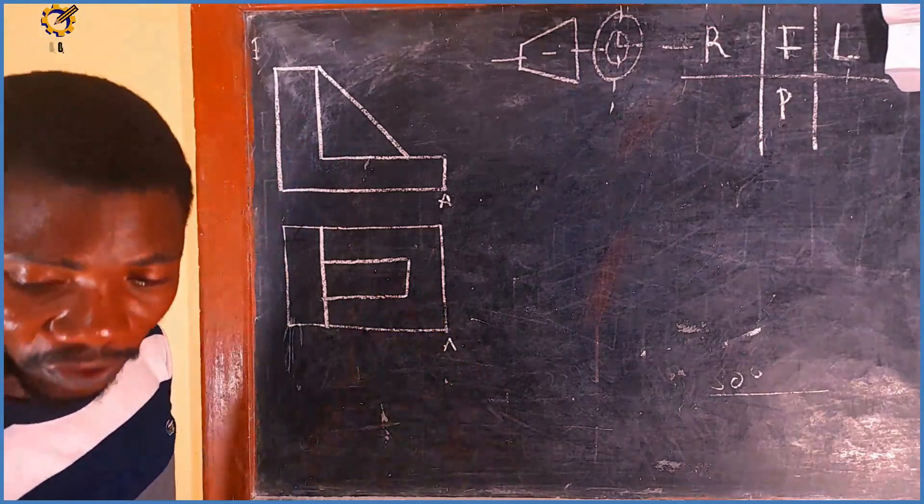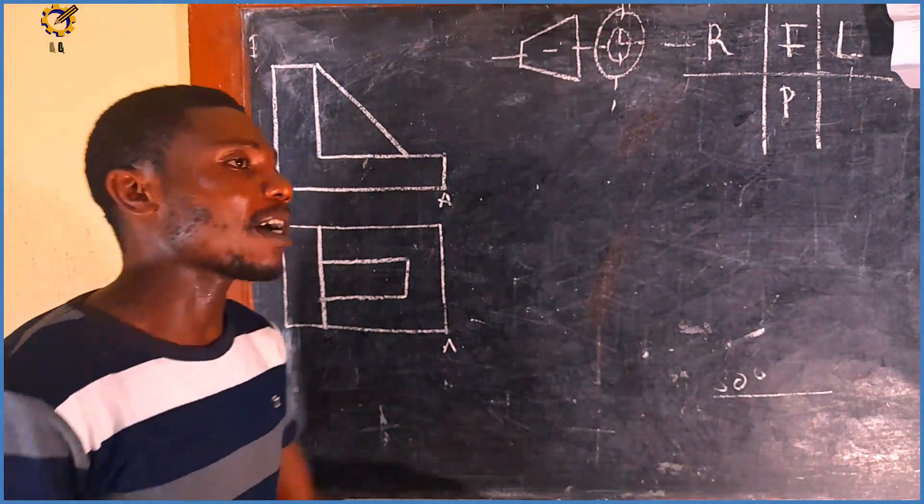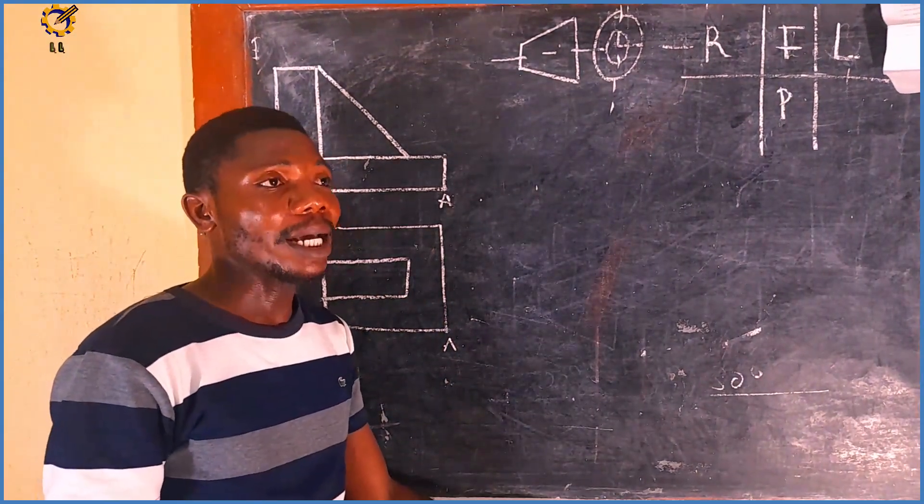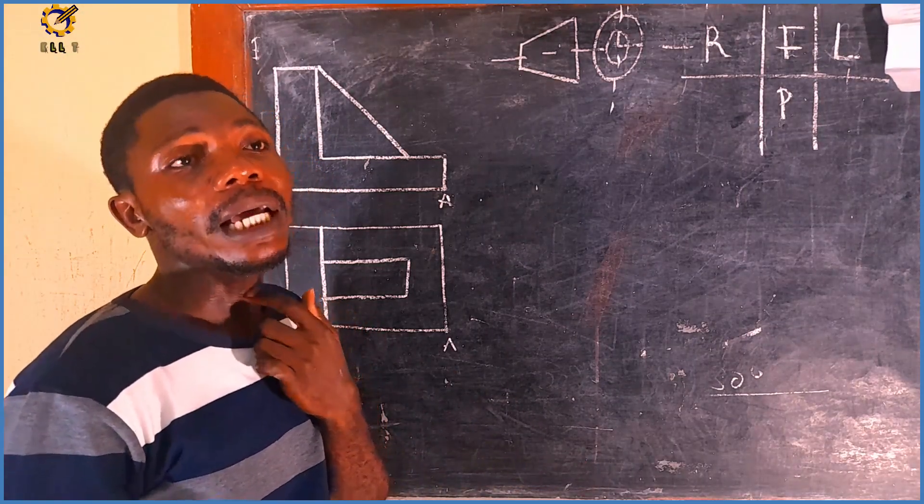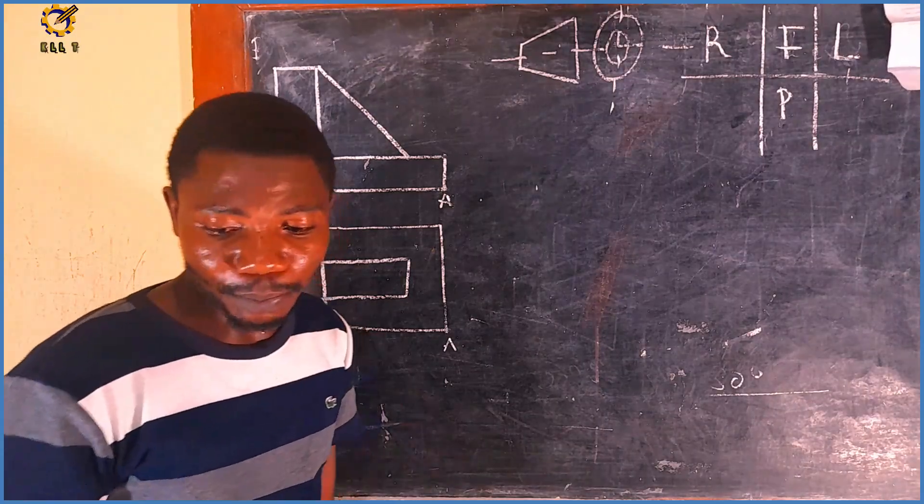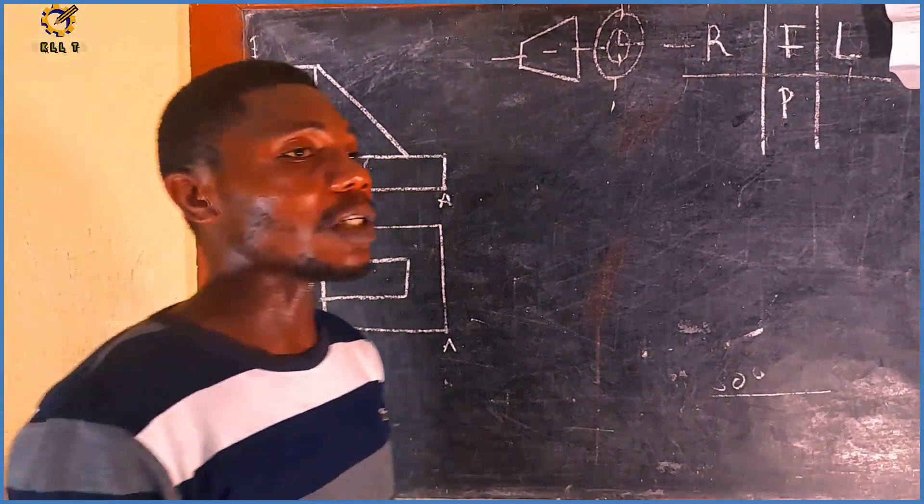This problem is extracted from page 165 from the popular text Engineering Drawing One by Pickup and Parker. This is problem number one, isometric problems.